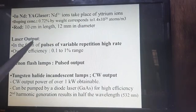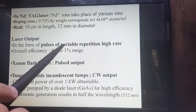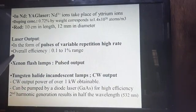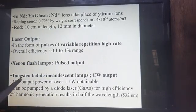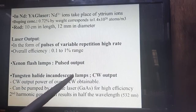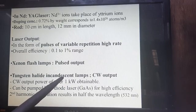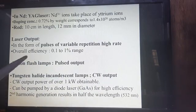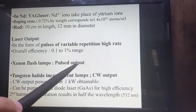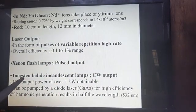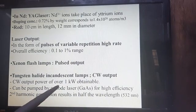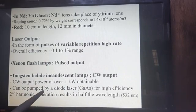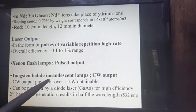The output is in the form of pulses of variable repetition rate, and the overall efficiency of this laser is in the range of 0.1 to 1 percent. Using a xenon flash lamp gives pulsed output, but using a tungsten halogen incandescent lamp gives continuous wave output with power of over 1 kilowatt. It can also be pumped by a diode laser for high efficiency.